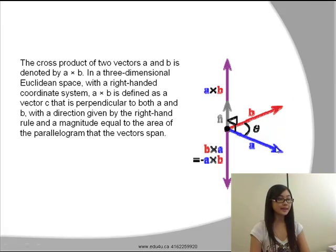If we have two vectors A and B, we can cross these two vectors to form a new vector C, such that C is perpendicular to both A and B.